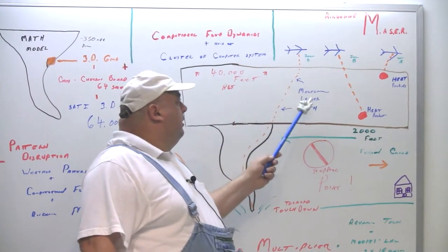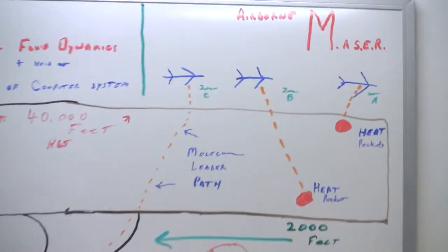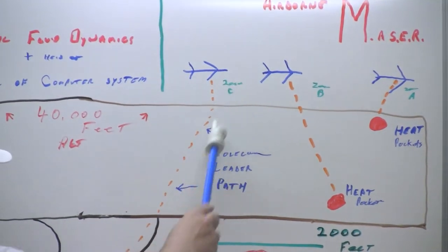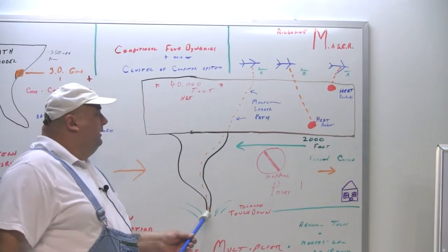The third one is what we call a molecule leader path. I will not get into that, but think of a continuity, a straight line from this point all the way down to where it would touch the ground. The key word is it would touch the ground, right here.